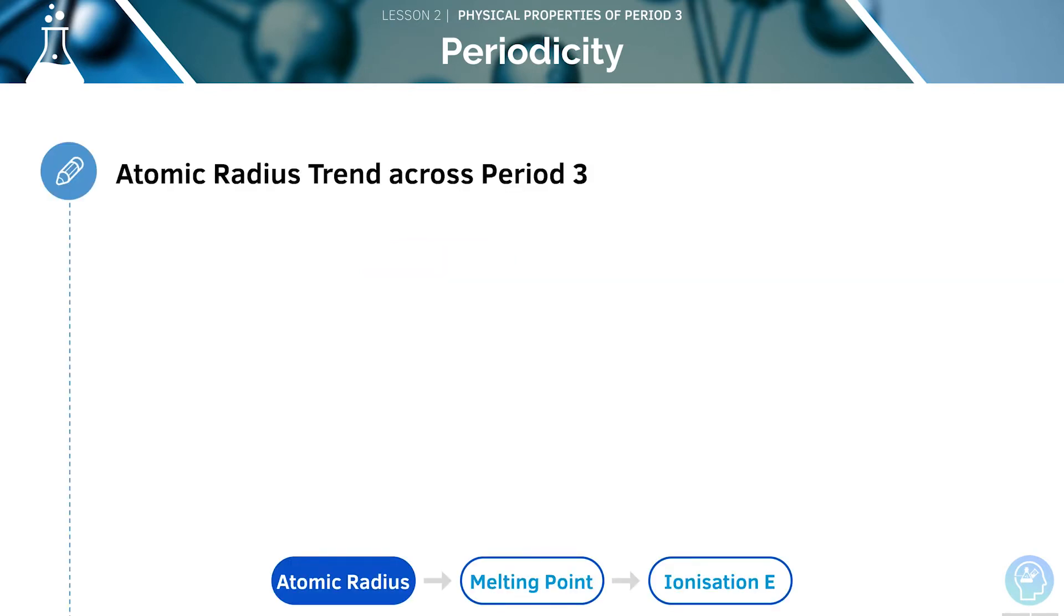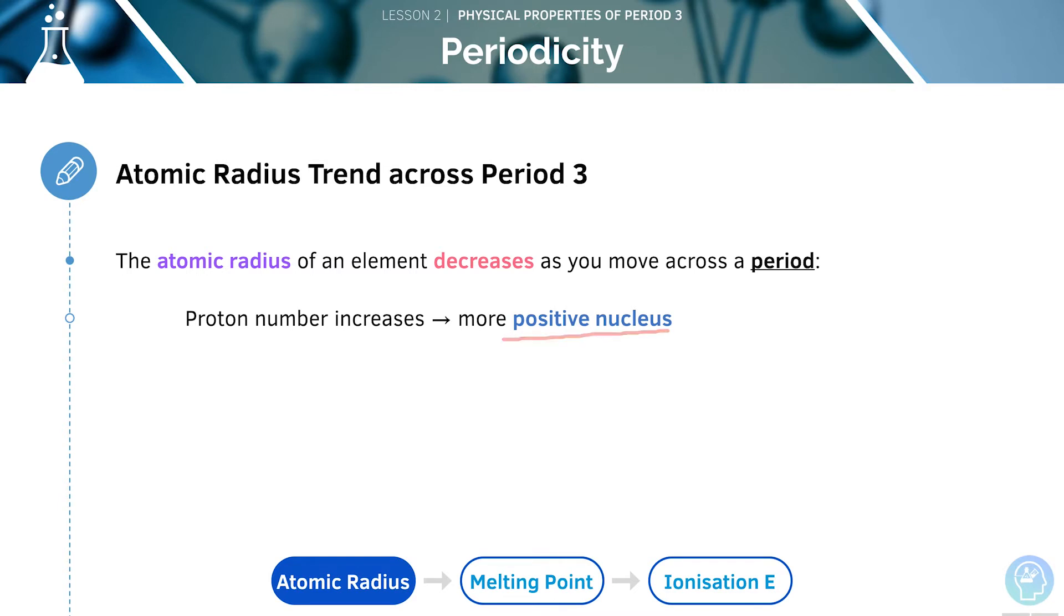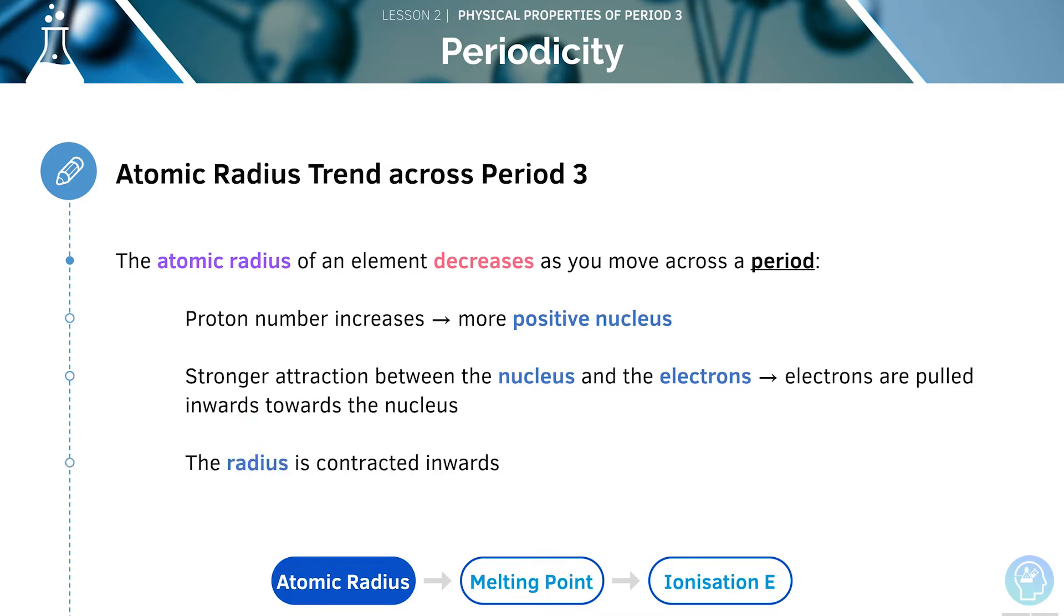Let's look at the atomic radius trend. The atomic radius of an element is going to decrease as we move across a period. The proton number of the element will increase as we move across the period, meaning that the number of protons increases, giving the nucleus a positive charge. This means there is a stronger attraction between the nucleus and the electrons in the orbitals. Therefore, the electrons will be pulled inwards towards the nucleus. This will contract the radius inwards, and therefore, the atomic radius is going to decrease.